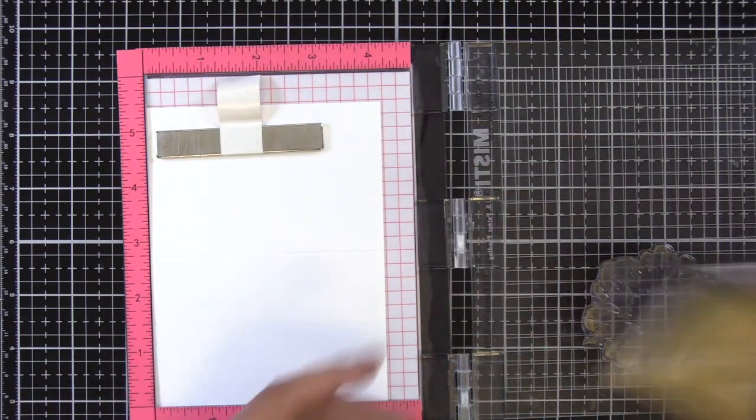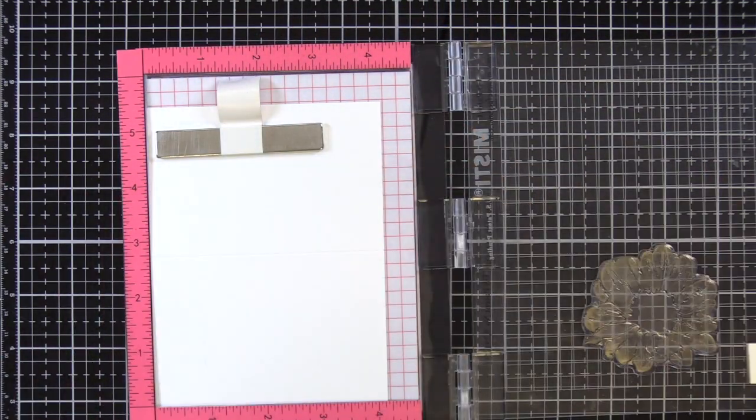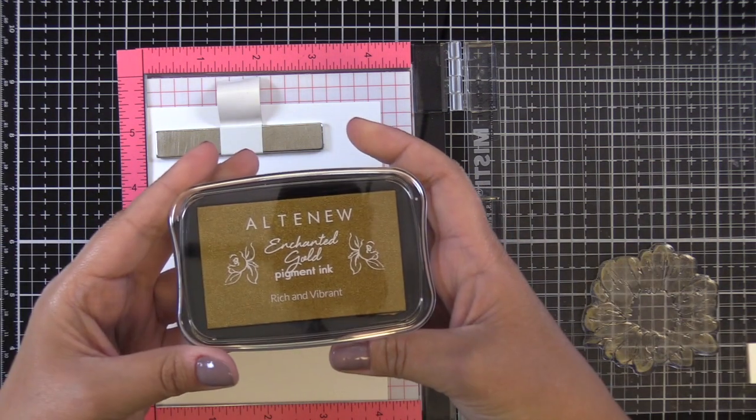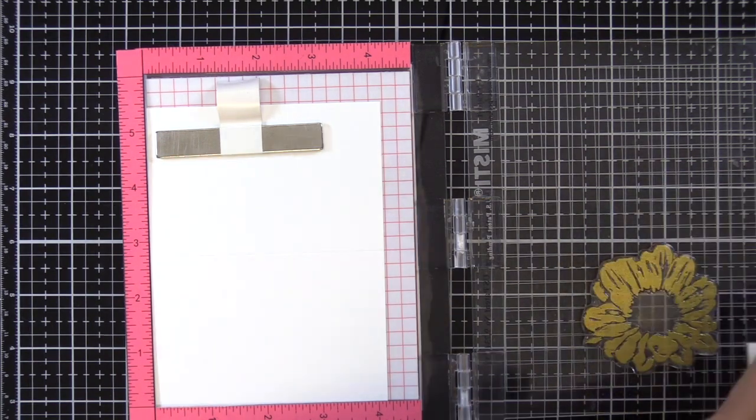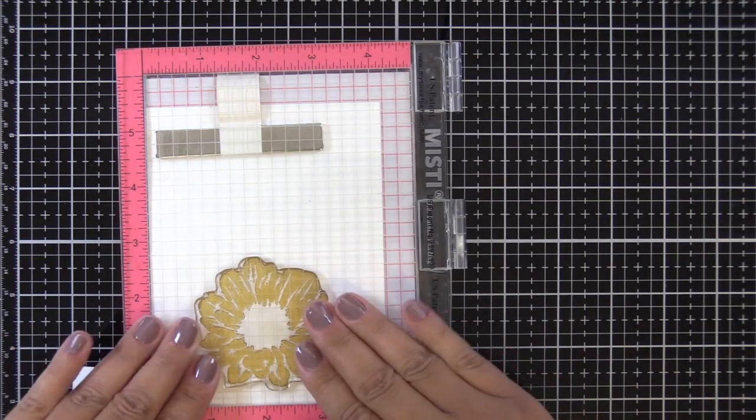I'm going to be using the two new Altenew pigment inks here, so there's two different golds. This one is the enchanted gold and it's kind of like the lighter brighter color.